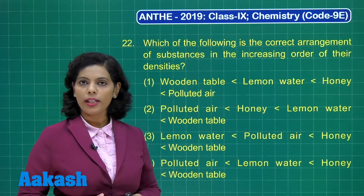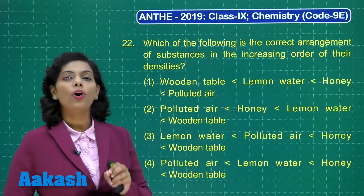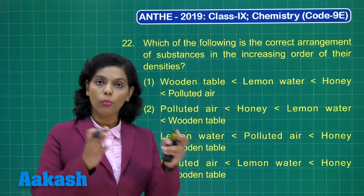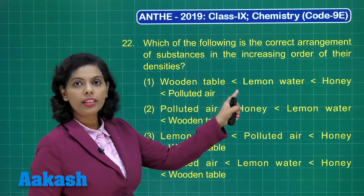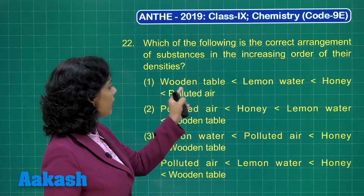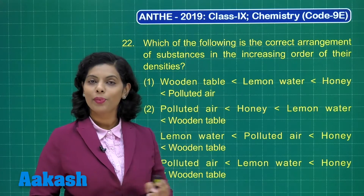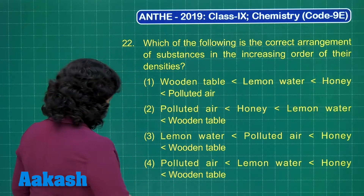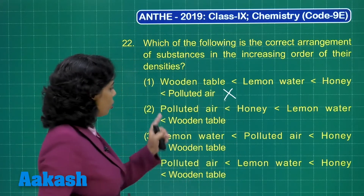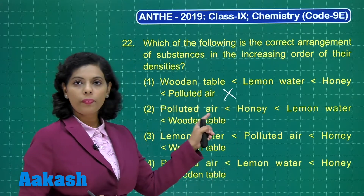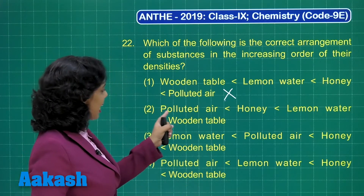If I talk about a wooden table, that is a solid, and lemon water, which is a liquid — densities of solids are generally more as compared to liquids. So the option stating that the wooden table has less density than lemon water is incorrect. I'll mark a cross over that option.